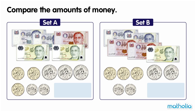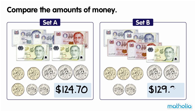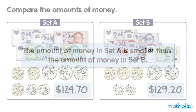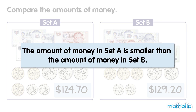Compare the Amounts of Money. $124.70 is less than $129.20. The amount of money in Set A is smaller than the amount of money in Set B.